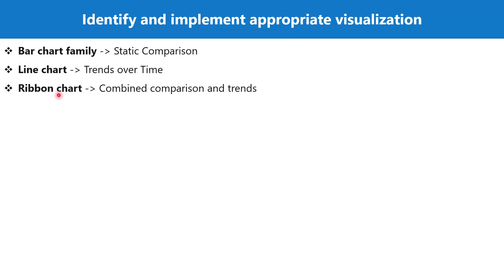There is another visual inside Power BI called the ribbon chart, which combines the functionality of the bar chart and the line chart — you can show comparison as well as trend inside a ribbon chart. However, there is a limitation: you cannot show many categories inside it, as the chart can become cluttered.